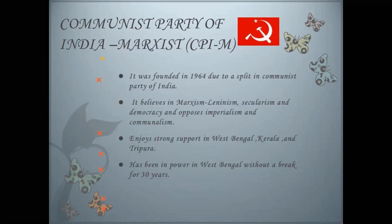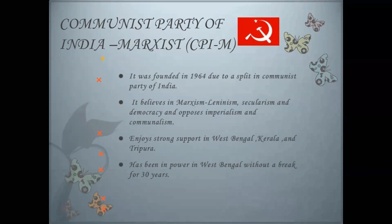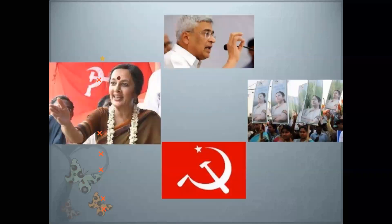Another important political party is Communist Party of India Marxist, CPI(M). It was founded in 1964 due to the split in the Communist Party of India. In the starting phase, this party was part of CPI with the same ideology — no change in ideology. This party enjoys strong support in West Bengal, Kerala, and Tripura. It has been in power in West Bengal continuously for 30 years without a break.